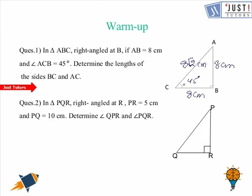Let us move to the next question: in triangle PQR, right angle at R, PR is equal to 5 cm, PQ is equal to 10 cm. Then determine angle QPR and angle PQR.